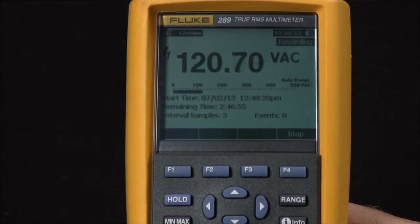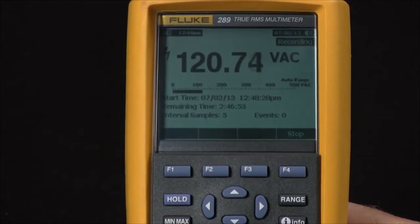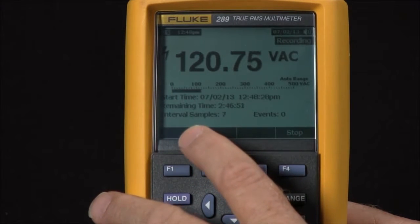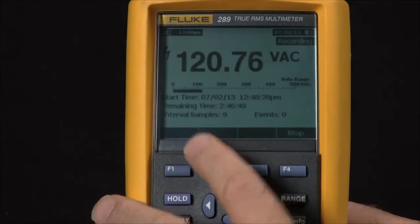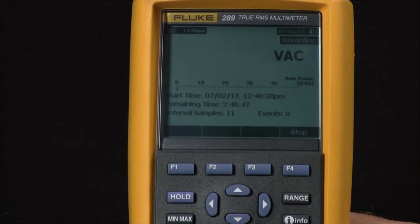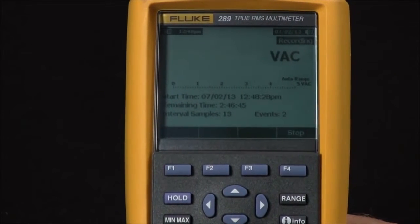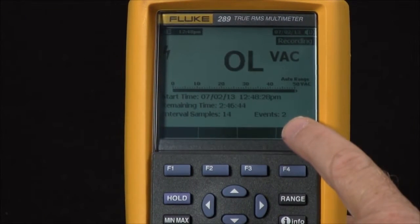Now there are two pieces of data it's actually recording. It's looking at both the interval samples where it's taking a reading every second, and then there are also events where if something happens outside the norm, this will be recorded as an event.